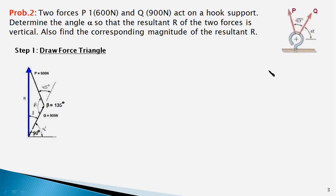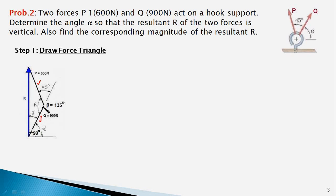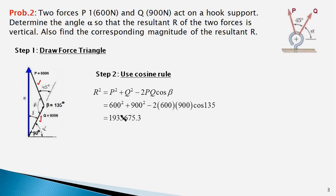The first step is to draw a force triangle. We draw a vector Q making an angle alpha with the horizontal — alpha is unknown and that is what we have to find. The vector Q is 900 Newtons in magnitude. From the line of action of Q at an angle of 45 degrees, we draw another line which intersects the vertical line representing the resultant R. We know the two sides and the included angle beta of 135 degrees, so we apply the cosine rule, plugging in P and Q as 600 and 900 Newtons. This yields R equal to 1391 Newtons.